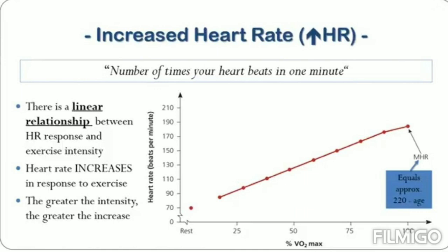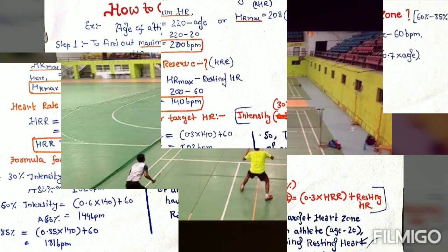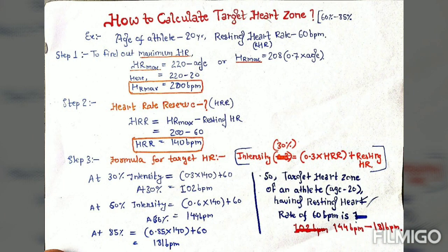The maximum heart rate varies depending on age, fitness level, and gender. When we start exercise, the target heart rate zone is typically 65 to 85% of maximum intensity. Each person's zone is different. To find out the target heart rate zone for an athlete, we need to know their age and resting heart rate, which can be measured through the carotid artery or radial artery.